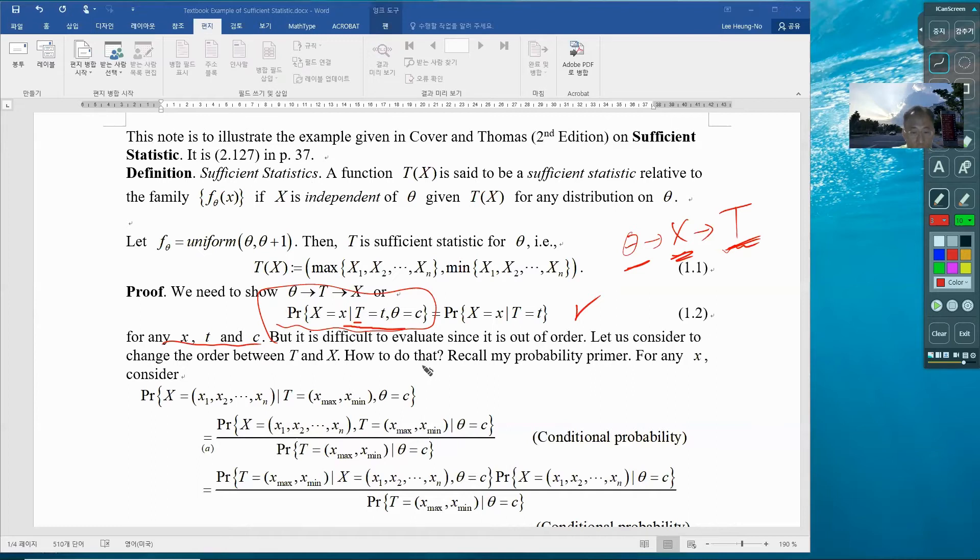We can consider to change the order between T and X. How to do that? You can use the Bayes rule. Bayes rule is the answer. We have done that already for a toy problem. Using that Bayes rule, which is nothing but combination of conditional probability and total probability theorem, which is more basic than Bayes rule.